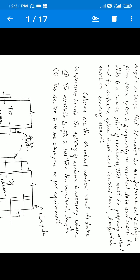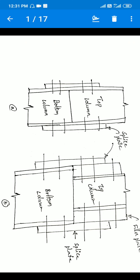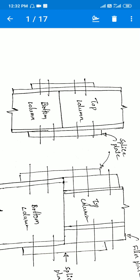First, let's understand the different types of column splices. A splice plate is provided to connect two different columns or same-sized columns. Looking at the first diagram, we have a top column and a bottom column. At a certain height the bottom column ends, and we connect another plate of the same size. Both columns have the same size — for example, ISMB or ISHB 250 — so the top and bottom will be the same section.